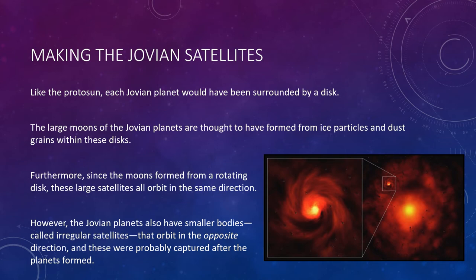However, the Jovian planets also have smaller bodies called irregular satellites that orbit in the opposite direction. These were probably captured after the planet's formation—in other words, they didn't form with the planet; they were captured by gravity later on.